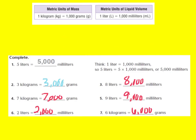Let's go over our answers. Number four: 7 kilograms equals 7,000 grams, because 7 times 1,000 equals 7,000. For number five: 9 liters equals 9,000 milliliters, because 9 times 1,000 equals 9,000. Number six: 2 liters equals 2,000 milliliters, because in one liter I have 1,000 milliliters, and 2 times 1,000 equals 2,000. For number seven: 6 kilograms equals 6,000 grams, because 6 times 1,000 equals 6,000. I hope you have the same answers as me.